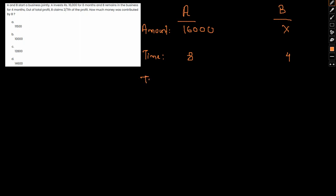So the total will be 16,000 into 8 and this will be 4X. Now the ratio of profit: for B it is 2/7, that means for A it will be 5/7, because the remaining profit goes to A.